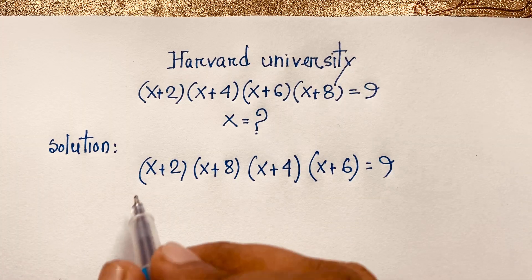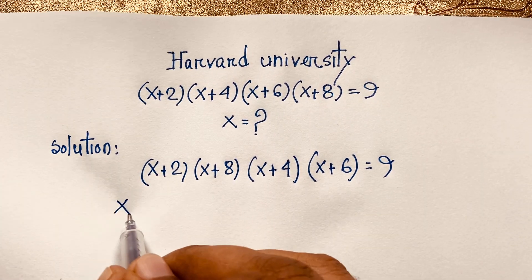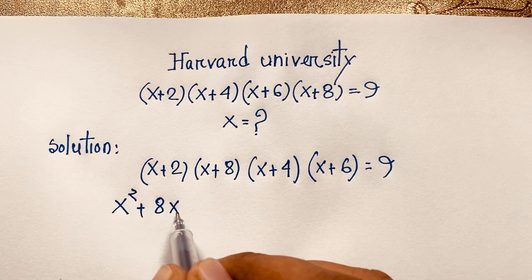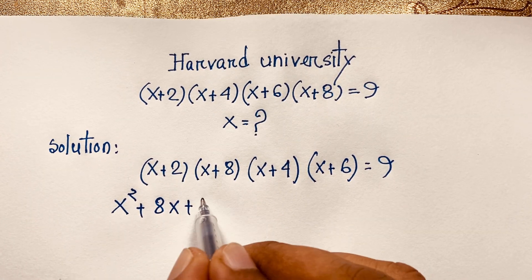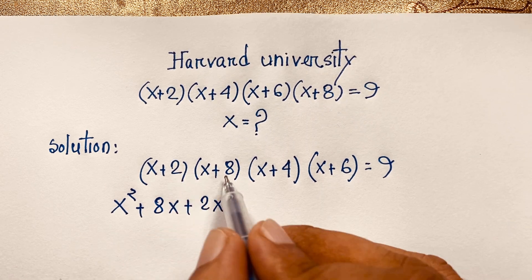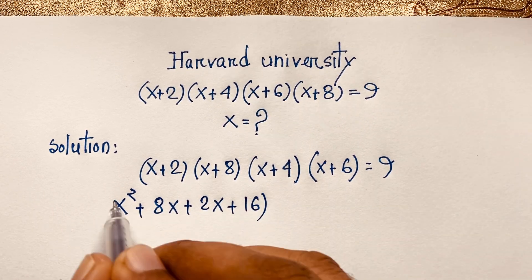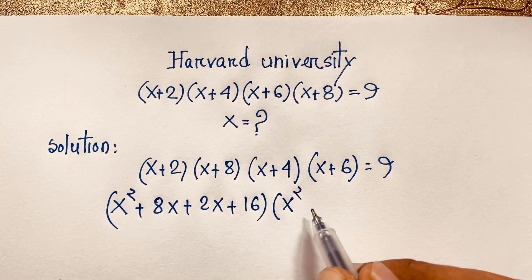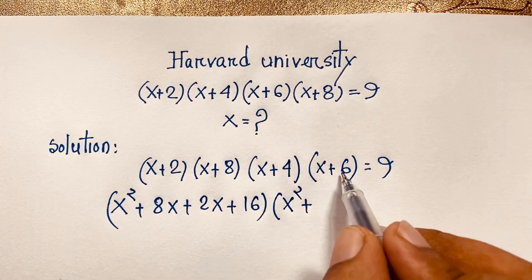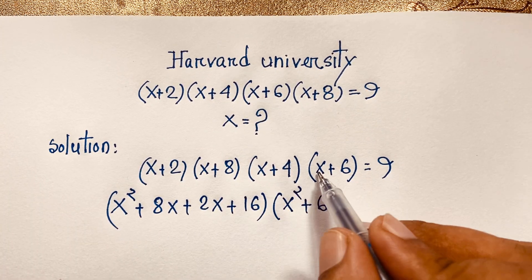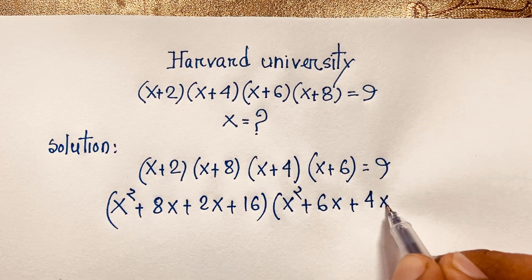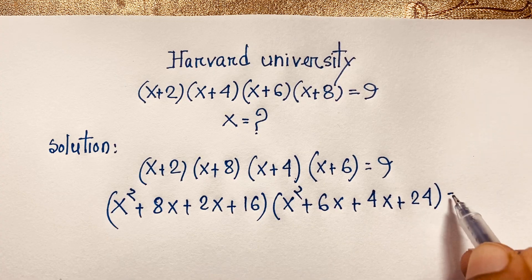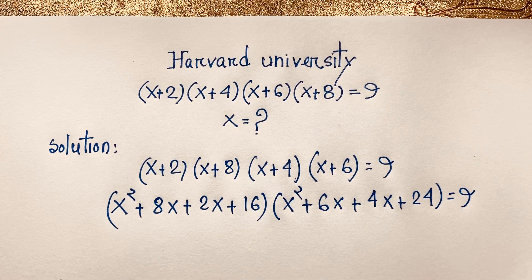Now, multiplying (x+2)(x+8): x times x is x², plus 8x, plus 2x, plus 16. Then multiplying (x+4)(x+6): x² plus 6x, plus 4x, plus 24. That product equals 9. I solved this step by step.